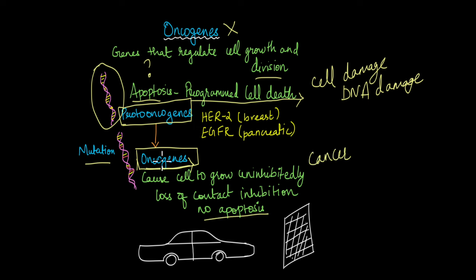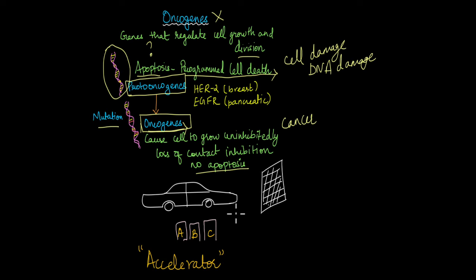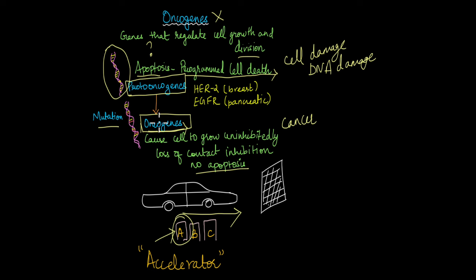You can think of oncogenes as the accelerator in a car. Say there is a car going down a road and a wall suddenly appears in front of it. If the accelerator of the car is stuck, the car is going to speed up and hit the wall. This is analogous to how oncogenes and proto-oncogenes work. If the accelerator is working properly, we can decelerate and stop the car. But if the accelerator is stuck — that is, when proto-oncogenes are mutated and form oncogenes — there is no stopping the car; it will inevitably crash into the wall.